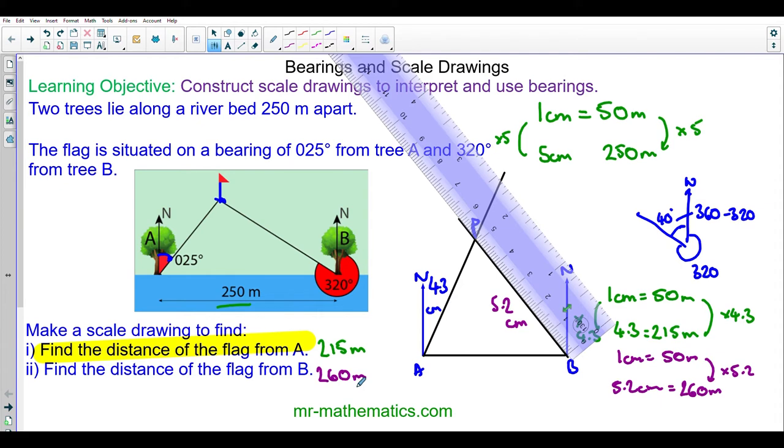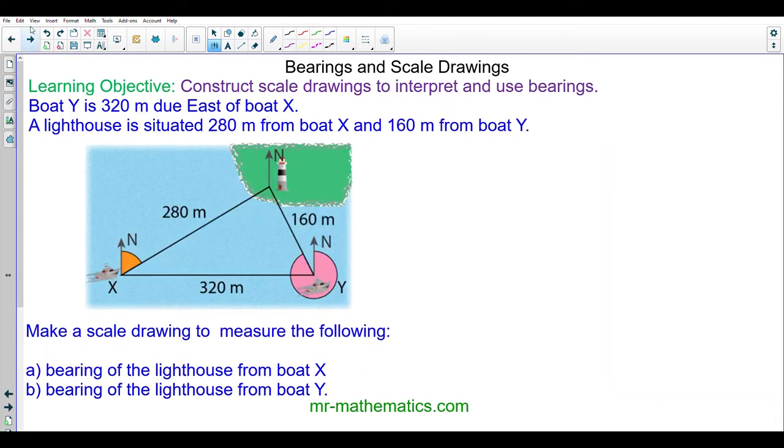Let's move on to our next question. Boat Y is 320 meters due east of Boat X. A lighthouse is situated 280 meters from Boat X and 160 meters from Boat Y. Make a scale drawing to measure the bearing of the lighthouse from Boat X and the bearing of the lighthouse from Boat Y. A bearing has three key points: we always start from north, it goes clockwise, and it has three digits. Do you want to try and make this scale drawing and work out the two bearings by pausing the video?